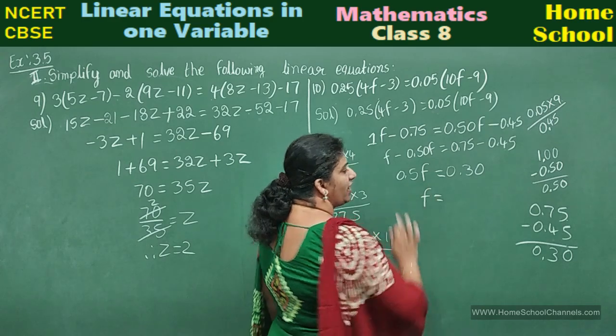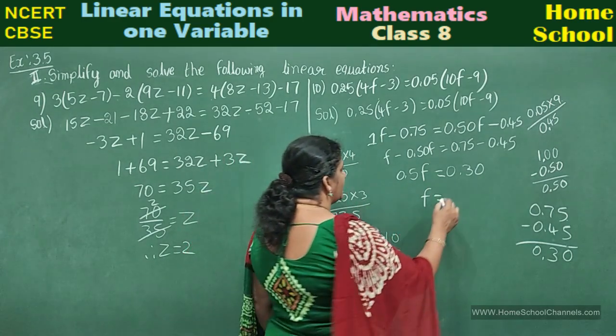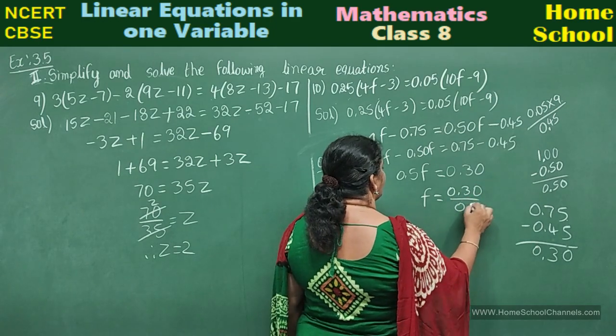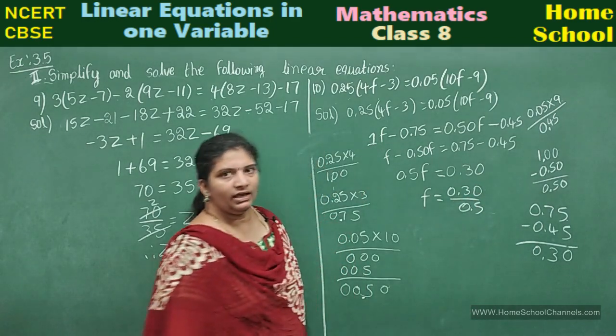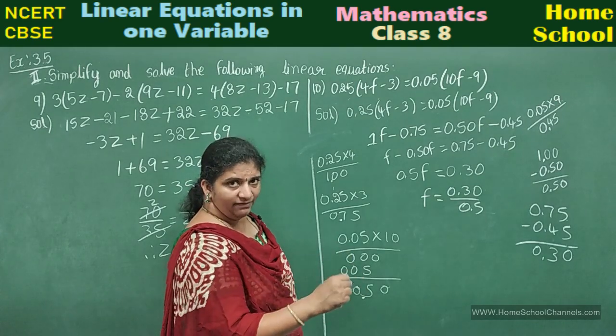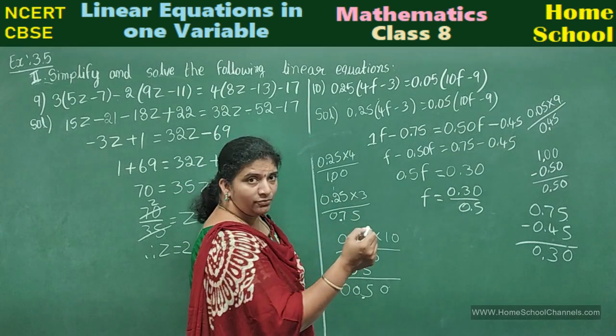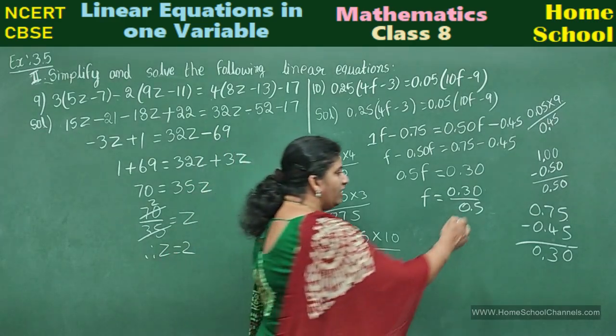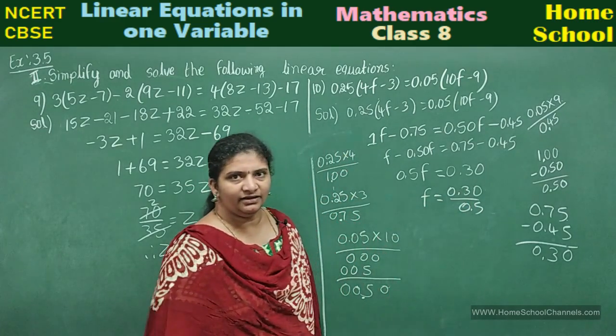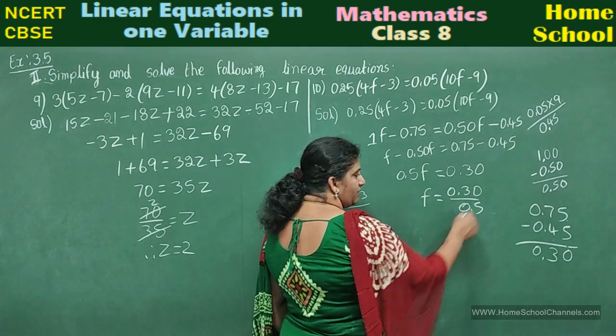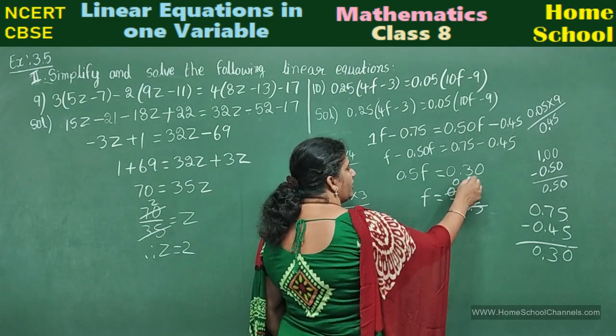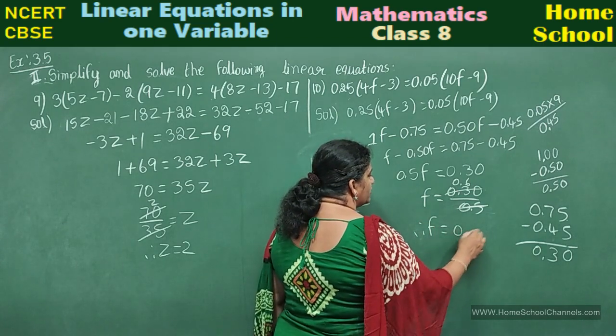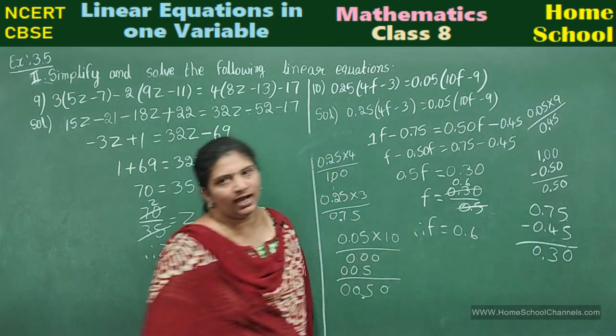Now f equals. Other than variable, 0.5 is extra. Transpose to the other side: 0.30 by 0.5. Observe carefully: 0.5 times 0.6, if you multiply, you get 0.30. Normally, 5 sixes are 30, right? So 0 point, same there. So directly you cancel: 0.6 you can write. Therefore, f equals 0.6 is your answer.